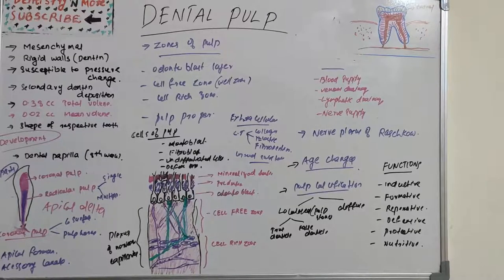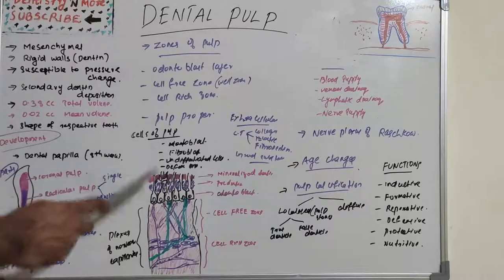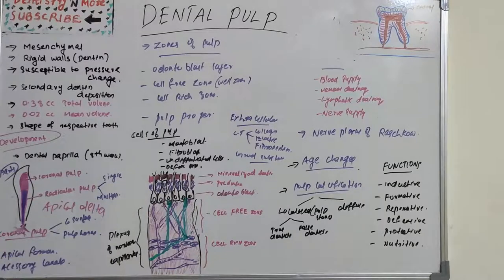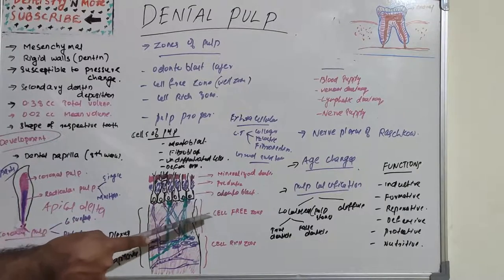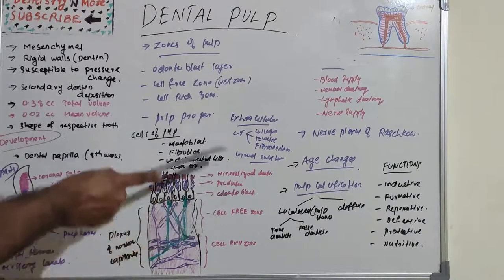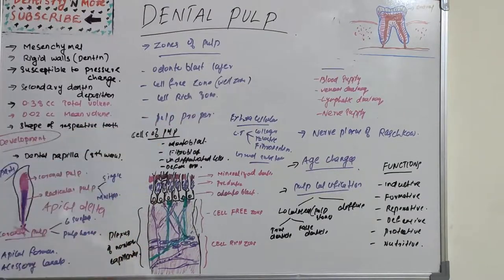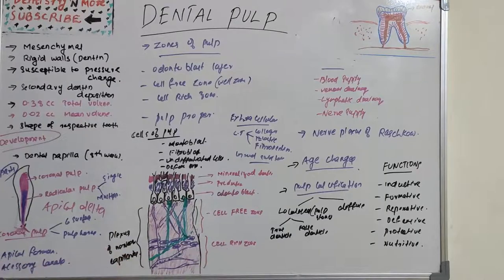Now let's move on to the important part — the zones of pulp. Histologically, the pulp has four zones: the odontoblast layer, the cell-free zone (also known as the Weil zone), the cell-rich zone, and the pulp proper.